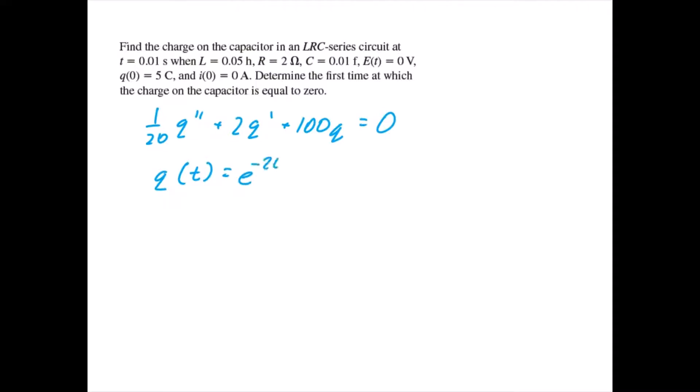Which is equal to e to the negative 20t times C1 cosine of 40t plus C2 sine of 40t. With the initial condition of Q of 0 being equal to 5 and Q prime of 0 being equal to 0, they imply that C1 is equal to 5 and C2 is equal to 5 halves.